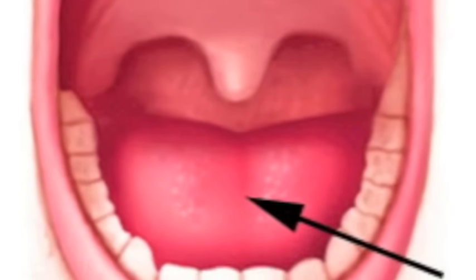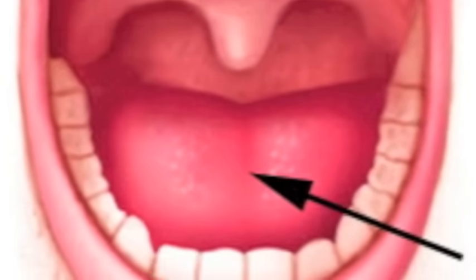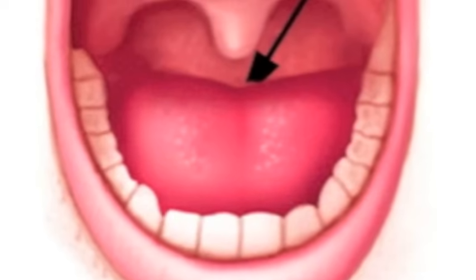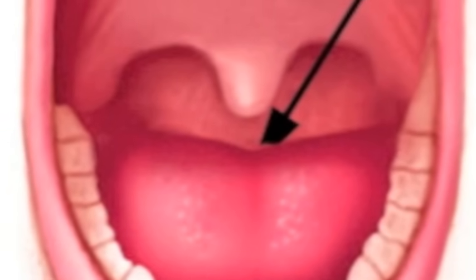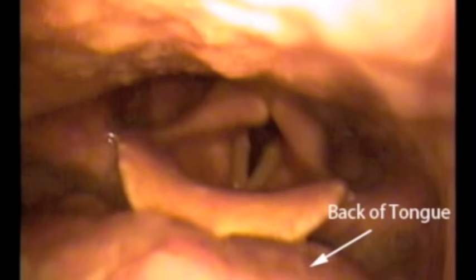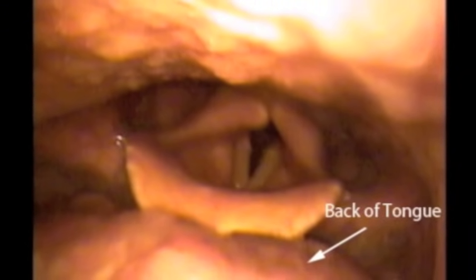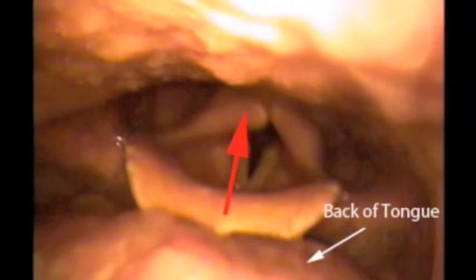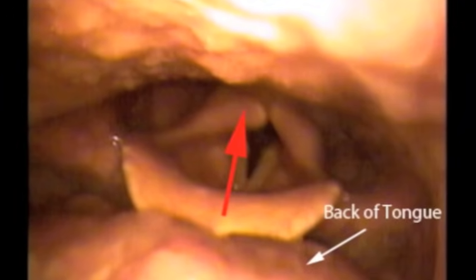Beyond the uvula, the tongue itself or even the back of the tongue can also vibrate, causing a snore and or obstruction. Watch how the tongue falls into the airway resulting in partial obstruction. When the tongue falls in the direction of the red arrow, the narrowing results in mucosal vibration resulting in a snore.